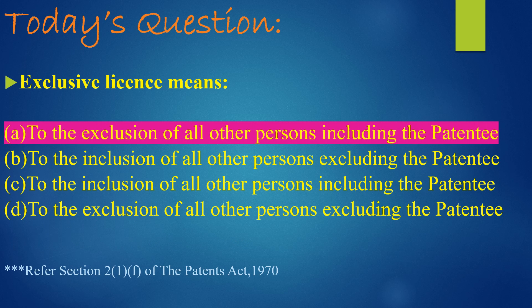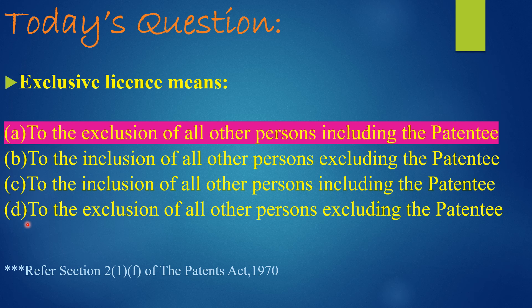Today's question is: 'Exclusive license means' — Option A: to the exclusion of all other persons including the patentee; Option B: to the inclusion of all other persons excluding the patentee; Option C: to the inclusion of all other persons including the patentee; Option D: to the exclusion of all other persons excluding the patentee.